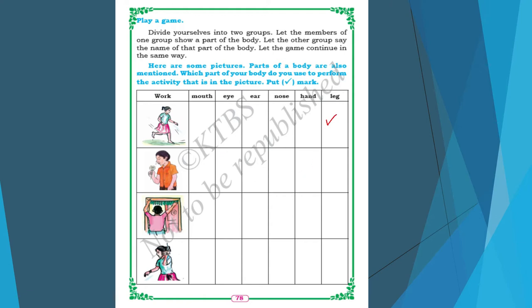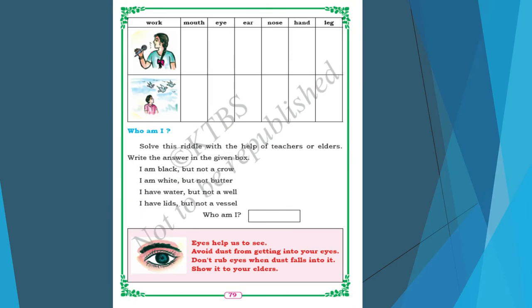In the second picture a boy is smelling the flower — to smell we need a nose. Here a boy is decorating the house using hands. A girl is listening to music — to listen we need ears. Now a girl is singing — to sing we need a mouth. Then a boy is watching the sky — to watch we need eyes.